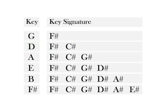Likewise, one half step above A sharp is B. Therefore, F sharp, C sharp, G sharp, D sharp, A sharp is the key signature of B major.